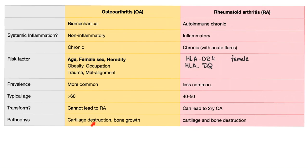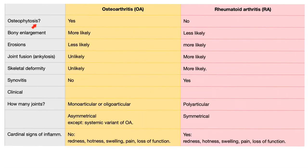Pathophysiology: osteoarthritis involves cartilage destruction but bone growth. Rheumatoid, however, involves cartilage destruction and bone destruction. Osteophytes are present in osteo but not in rheumatoid. Bony enlargement is more likely in osteo; erosions, ankylosis, and skeletal deformity are more likely in rheumatoid. Rheumatoid is nasty — it destroys everything. Synovitis is the hallmark of rheumatoid.